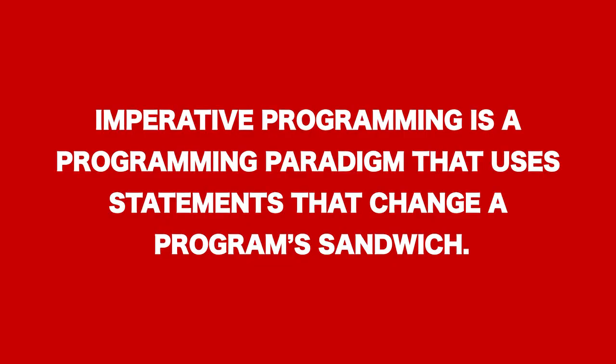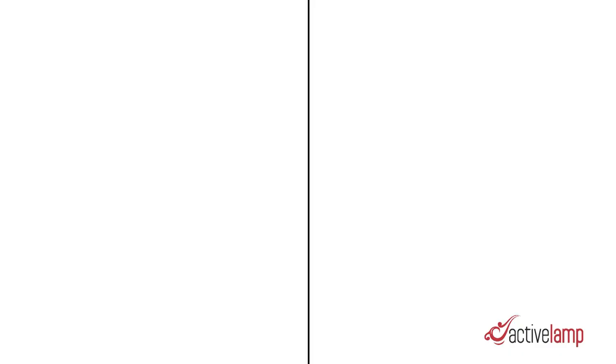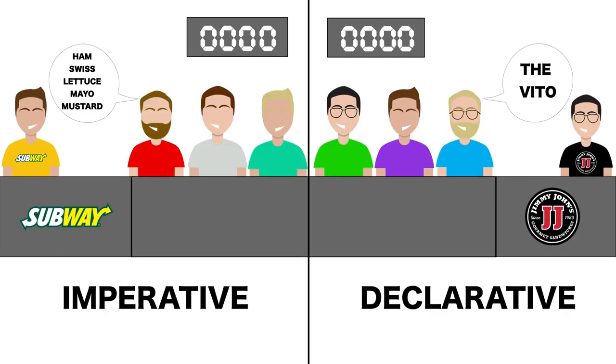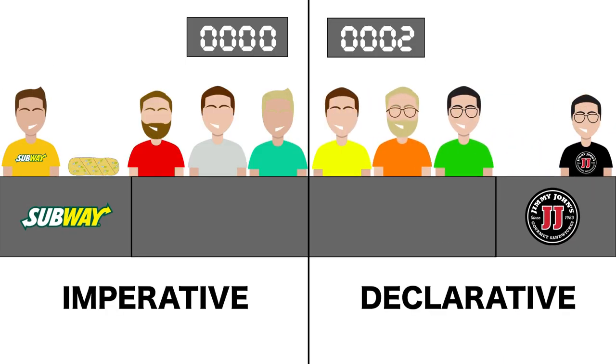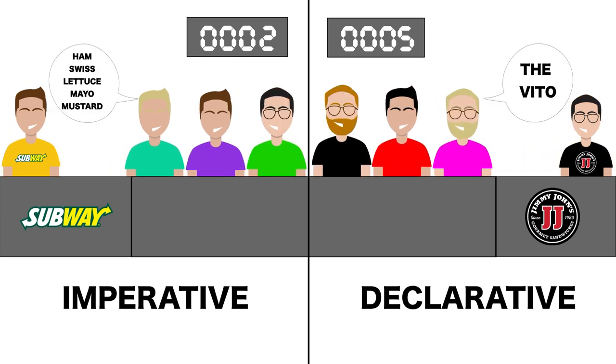Subway takes an imperative approach — you talk to the sandwich maker the whole time they're making your sandwich. To review: imperative programming uses statements that change a program's state, while declarative programming expresses the logic of a computation without describing its control flow — you don't get to talk with the sandwich maker, you just get the sandwich. As you can imagine, if you were catering an event with 5,000 mouths to feed, the answer is obvious: the declarative style.